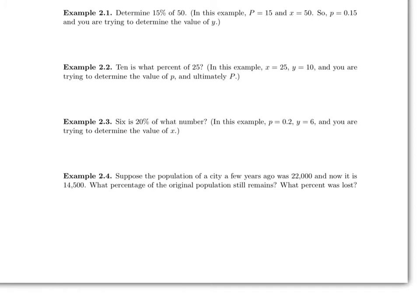Example 2.1: Determine 15% of 50. So, 15% of 50. 15% can be written as a decimal as 0.15. To calculate 15% of 50, we multiply the 0.15 by 50. The result, when we do this on our calculator, is 7.5. So, 7.5 is 15% of 50.